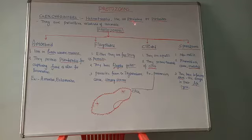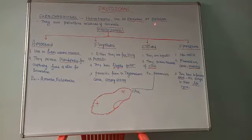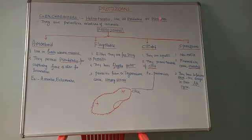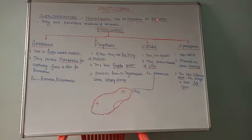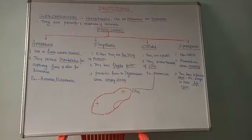Predators are animals which kill and eat other organisms. Parasites are organisms which draw their nutrition from a living host. So protozoans either may be predators — they kill other organisms and eat them — or they may be parasites, drawing nutrition from a living host.